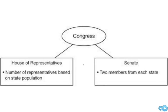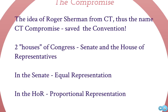In the other house, representation would be based on proportional representation — the number of representatives would be based on state population. So Virginia would have the most, and states like Delaware and Rhode Island would have very few. This made small states happy because they got some of what they wanted in the Senate, and large states got some of what they wanted in the House. Neither side got everything — that's why it's called a compromise.